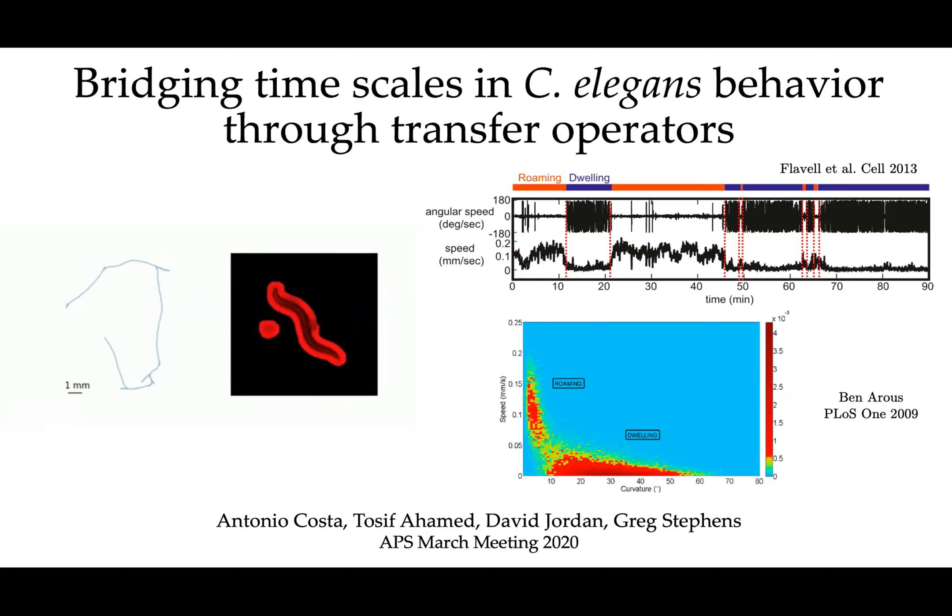On the other hand, if you zoom out completely and focus only on the position of the worms on the plate, you also see longer timescale structures like sequences of behaviors where the worm moves really fast across the plate. Those are called roaming, and you can see that they happen on minute-long timescales. The worms exhibit higher speeds and lower curvature rates.